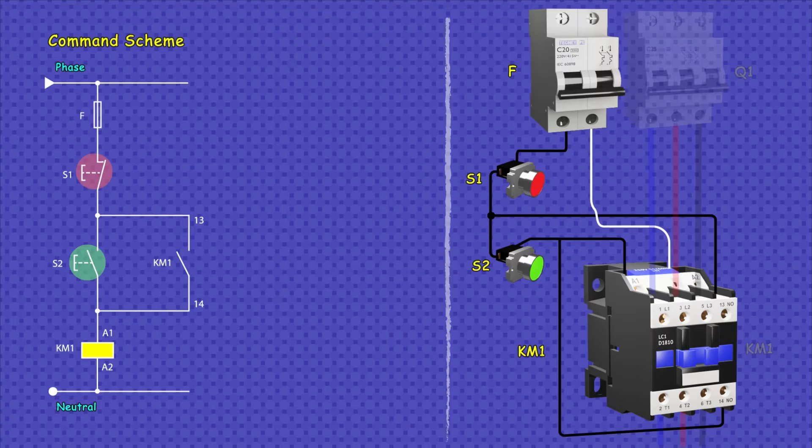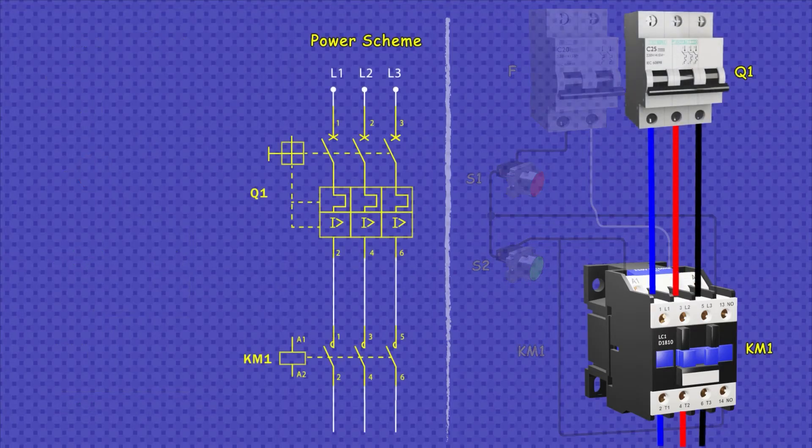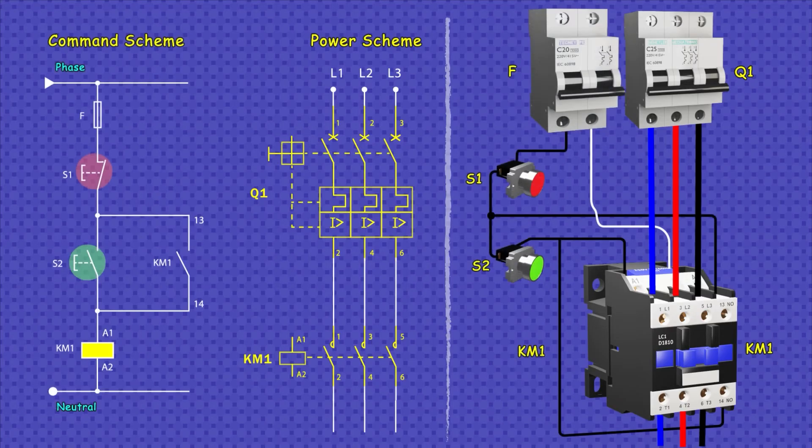This is the circuit where the operator can interact to control the system. The second part is the power circuit, which is made up of a three-pole thermomagnetic switch and the contactor itself. In this part, it is used to connect high-power loads such as motors, heaters, lighting systems, and more. As we see, the contactor is what allows the link between the command or control circuit and the power circuit, with this element large loads can be controlled.